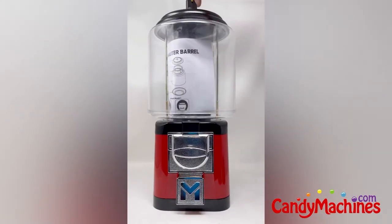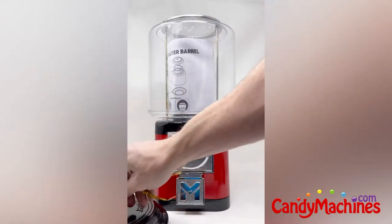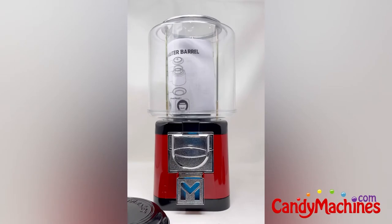This machine comes pre-configured to vend small loose candy, like Skittles, Nuts, or Mike and Ikes. Please review the instruction manual to ensure you have the correct wheel for the items you plan on vending.